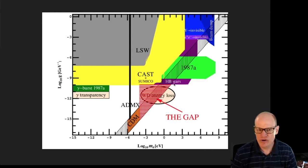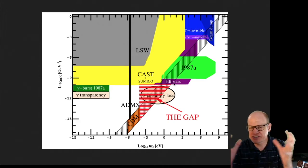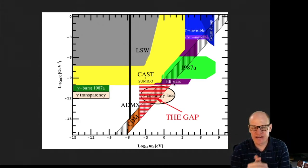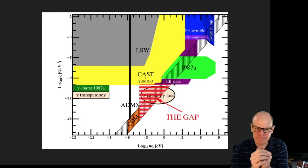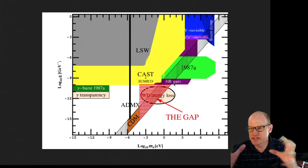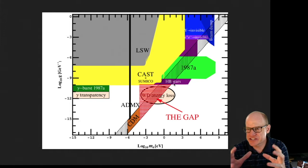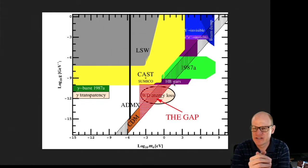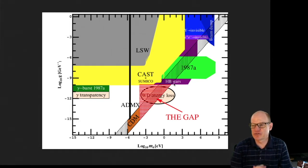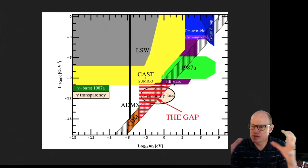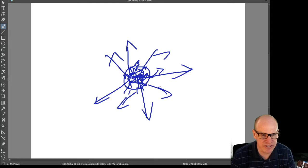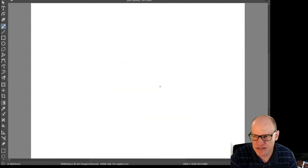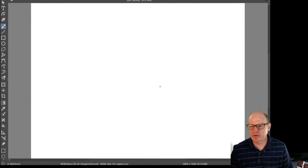Horizontal branch stars operate on the same idea. Horizontal branch stars undergo pulsation, and if the star can lose energy through the production of axions instead of through radiation or neutrinos, that would affect the pulsation properties of horizontal branch stars.